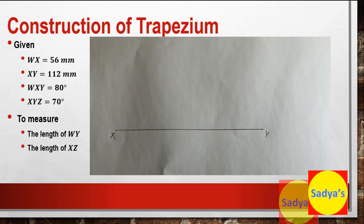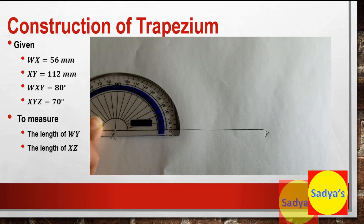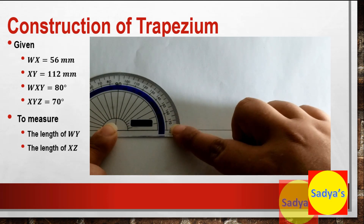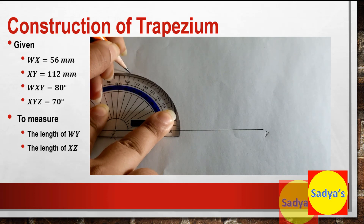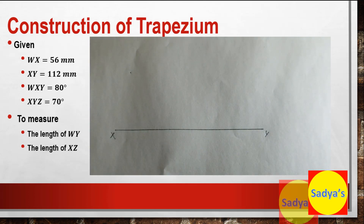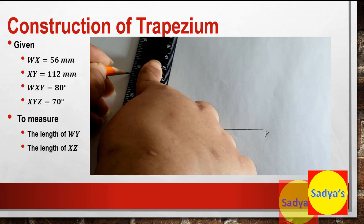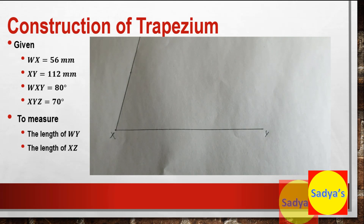Since the measurement of angle X is 80 degrees, we'll take our protractor and place it at point X. Since the line is towards the right side of the center, we are going to measure from the right — this is 0 and 80 degrees would be here. Mark 80 degrees and then join this point with X and extend the line.